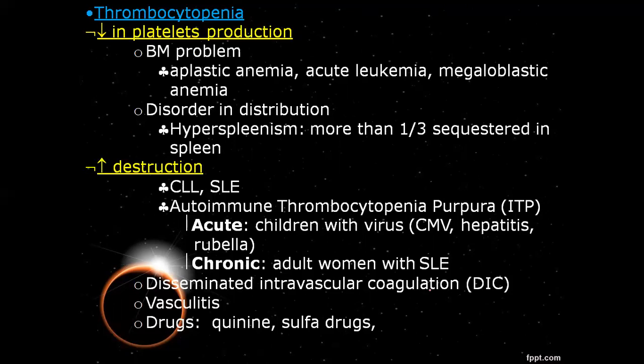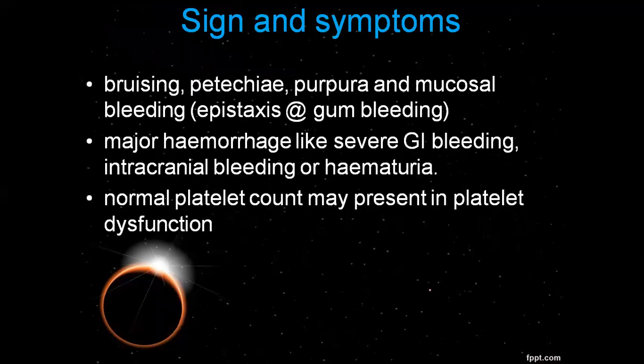Increased platelet destruction is another cause of thrombocytopenia. Autoimmune thrombocytopenic purpura, or ITP, is a key example. In acute cases, we have hepatitis. In chronic cases, it occurs in adult women with SLE. Drugs — mostly quinine and sulfa drugs — can also cause increased destruction.